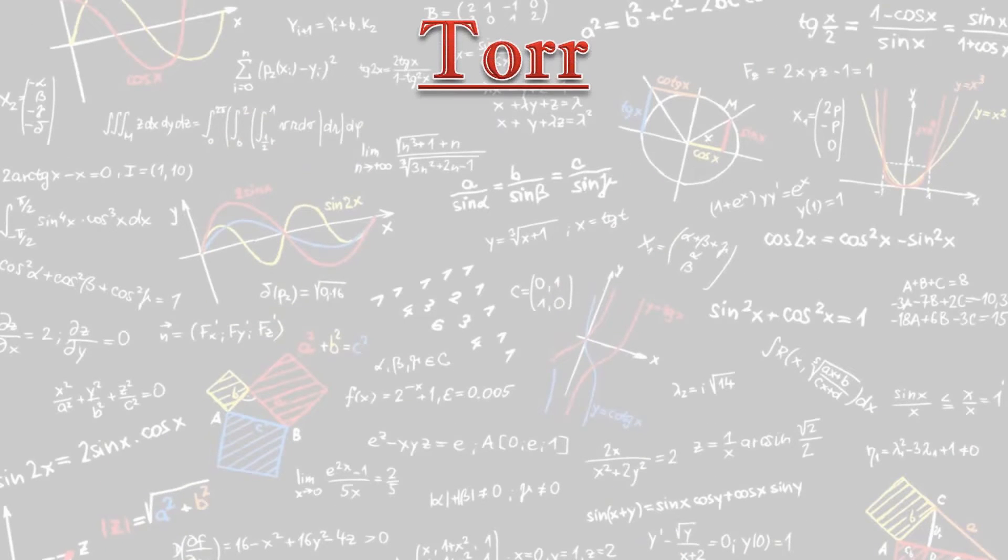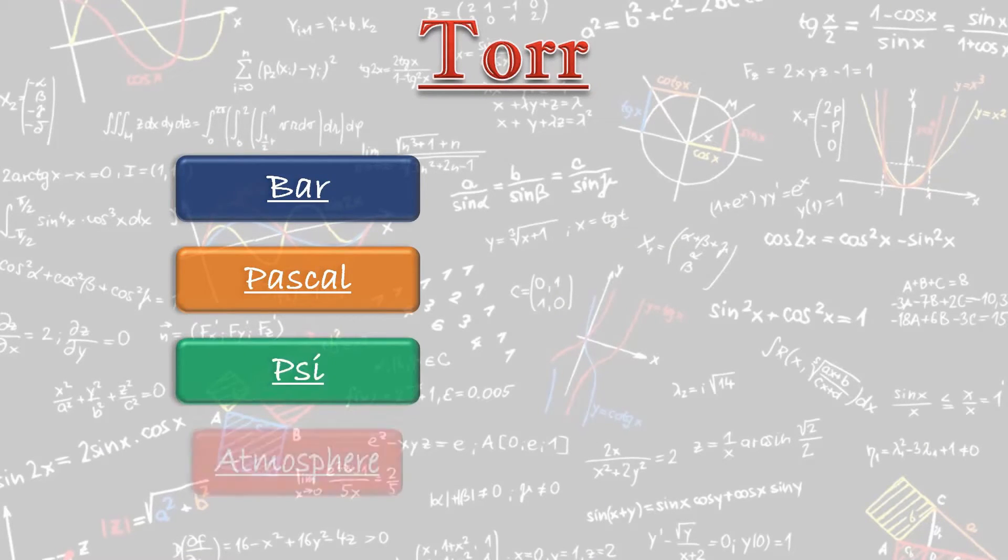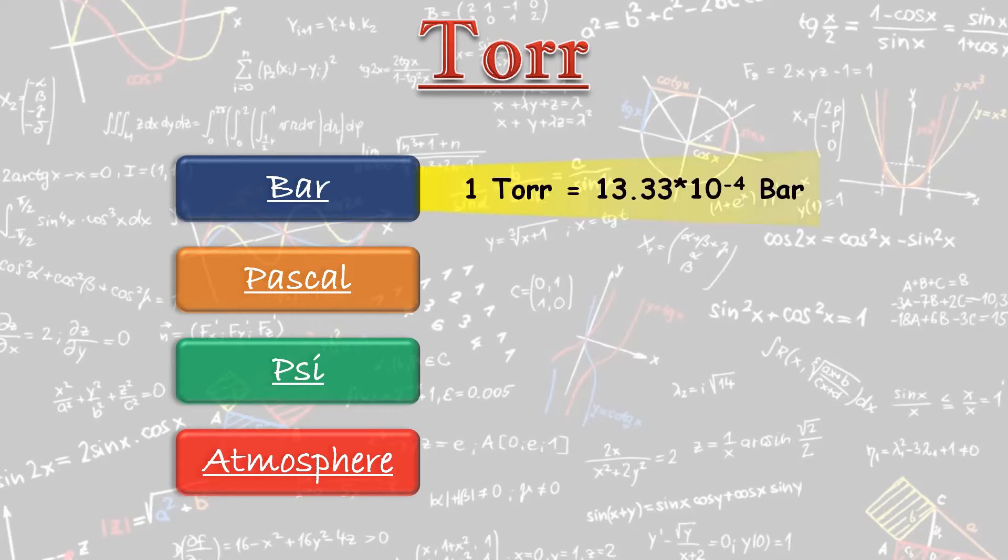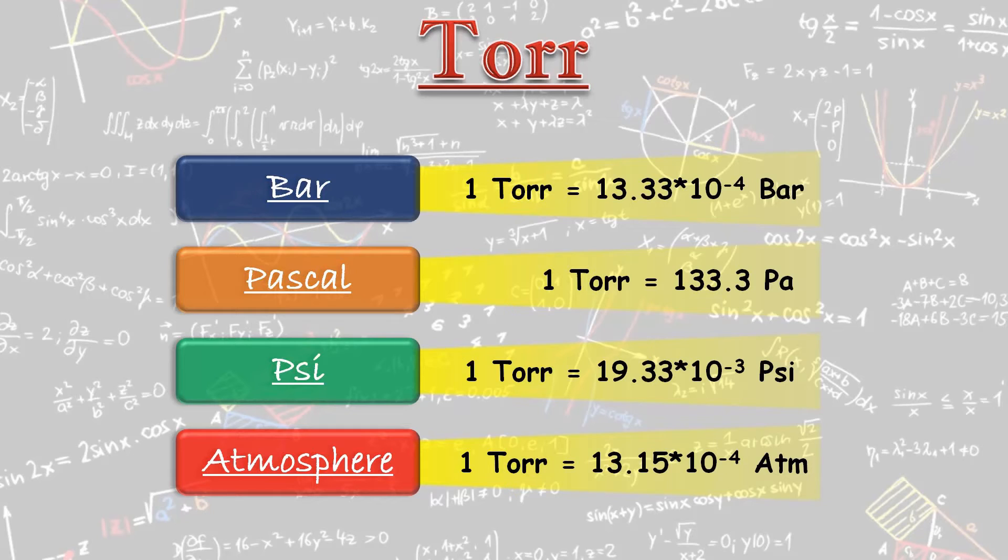Next is correlation of Torr with bar, Pascal, PSI and atmosphere. 1 Torr is equal to 13.33 × 10^-4 bar. 1 Torr is equal to 133.3 Pascal. 1 Torr is equal to 19.53 × 10^-3 PSI. And 1 Torr is equal to 13.15 × 10^-4 atmosphere.